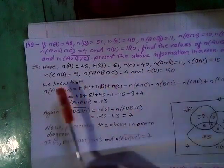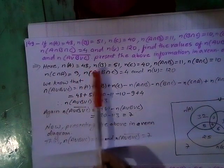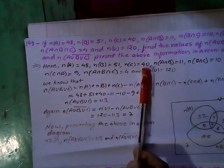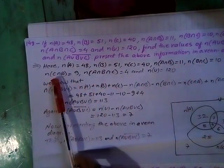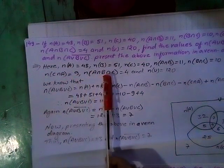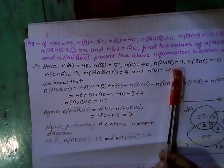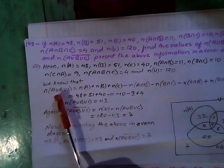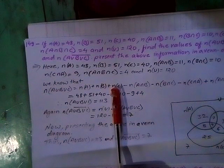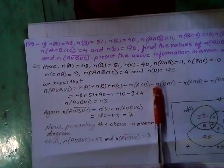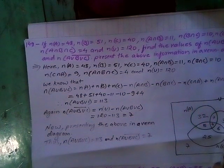Solution: N A equals 48, N B equals 51, N C equals 40, N A intersection B equals 11, N B intersection C equals 10. Using the formula N A union B union C equals N A plus N B plus N C minus N A intersection B minus N B intersection C minus N C intersection A plus N A intersection B intersection C.